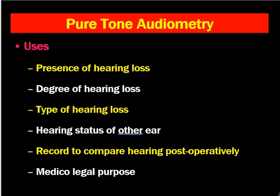Next is pure tone audiometry (PTA), which is very useful. Its uses are: to know the presence of hearing loss, the degree of hearing loss — mild, moderate, or severe — and the type of hearing loss, whether conductive, sensorineural, or mixed. It also helps to look for the hearing status of the other ear so we can compare both ears, and when the other ear has sensorineural hearing loss, we can counsel the patient regarding treatment outcomes.